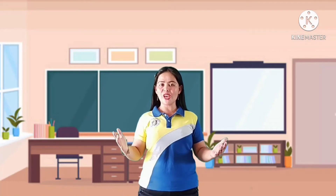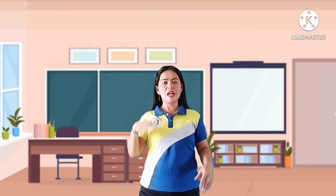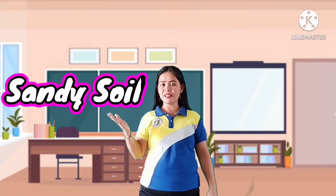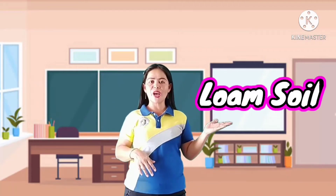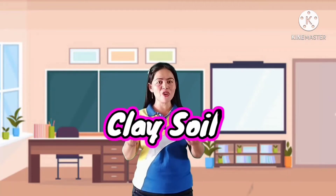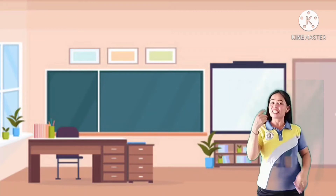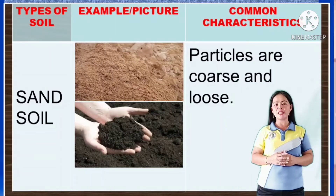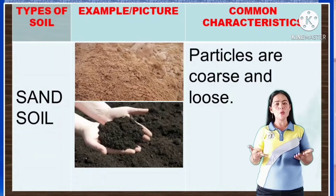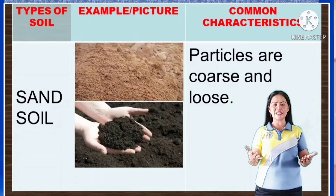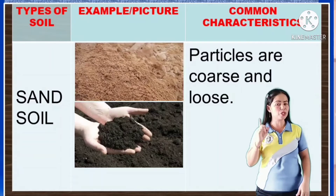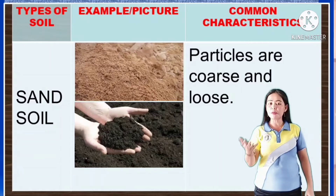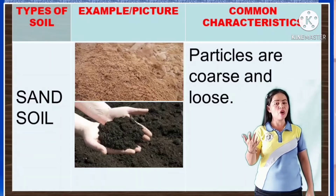Here are the three major types of soil: sandy soil, loam soil, and clay soil. Sandy soil particles are about 4 centimeters. It has a low water holding capacity, few nutrients, and a light brown gradient color.